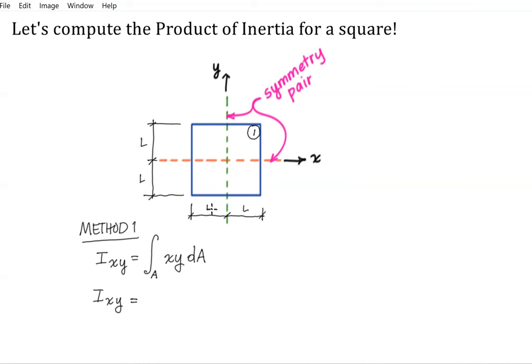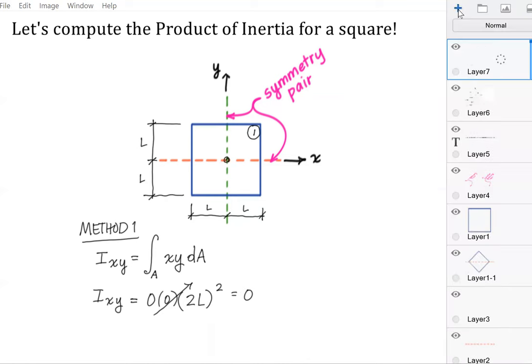Alright, so the total area of my square, I have 2L quantity squared, but I look at the centroid of that square. It does lie on the overall centroid of the cross section. So my X and Y coordinates, they're both going to be zero. So I can conclude that my product of inertia, I_XY, is going to be equal to zero.